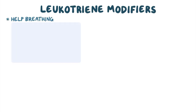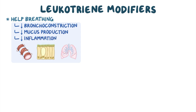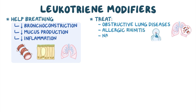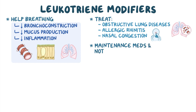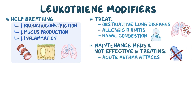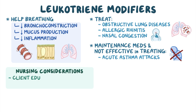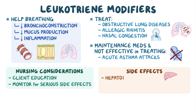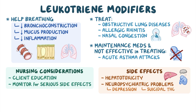As a quick recap: leukotriene modifiers help improve breathing by decreasing bronchoconstriction, mucus production, and inflammation. They are often used to treat obstructive lung diseases, allergic rhinitis, and nasal congestion. Leukotriene modifiers are maintenance medications and are not effective in treating acute asthma attacks. Nursing considerations include client education and monitoring for serious side effects, including hepatotoxicity and neuropsychiatric problems like depression and suicidal thoughts.